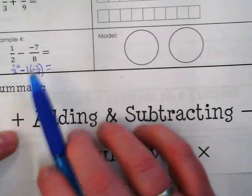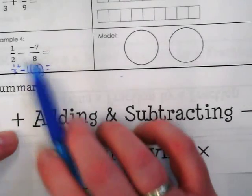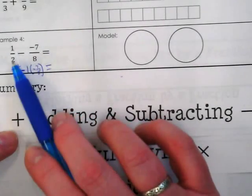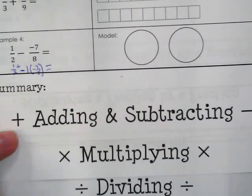Negative times negative becomes a positive so you're going to rewrite this so this is a positive and then worry about changing the denominators.